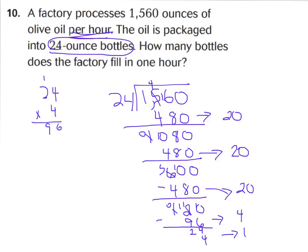If I add up all my partial quotients, I have 20, 40, 60, 64, 65. So I could say that they can make 65 bottles in one hour.